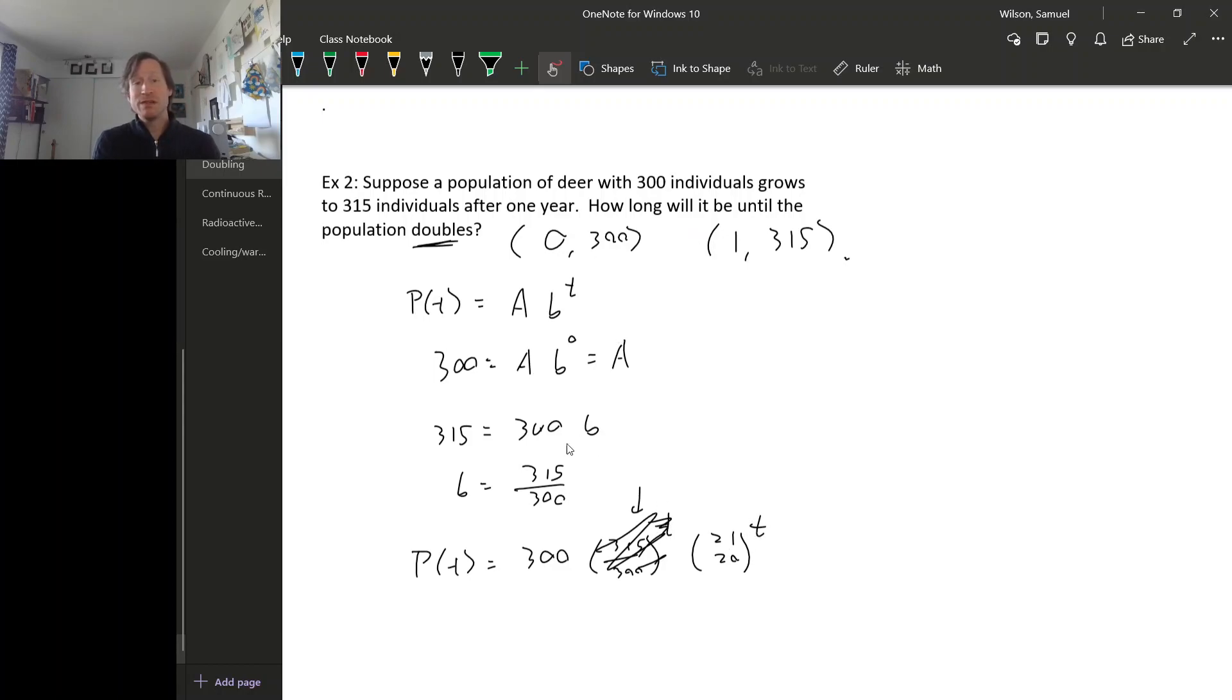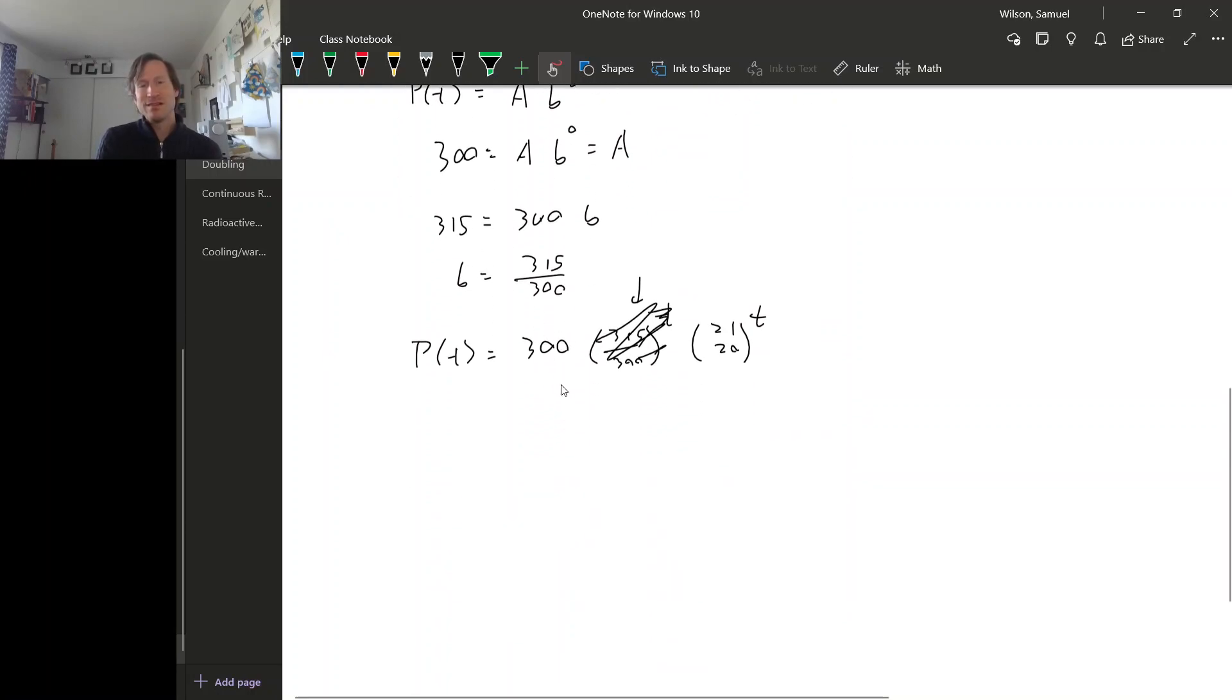Okay, so we want to know how long it will be until the population doubles. Well that's going to be 600 because we're starting with 300. So we want to know when is 600 equal to P of T. We need to solve this equation. But P of T is this formula here, so 300 times 21 over 20 to the T. Notice that this 2 here, this is a 2 because we asked for how long the population takes to double. If we wanted to know how long it took to triple we just put a 3 here and so on.